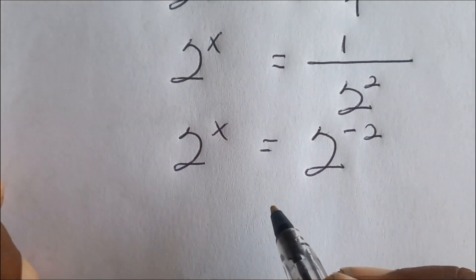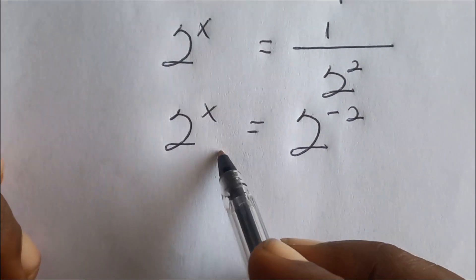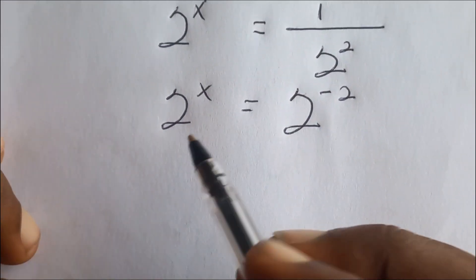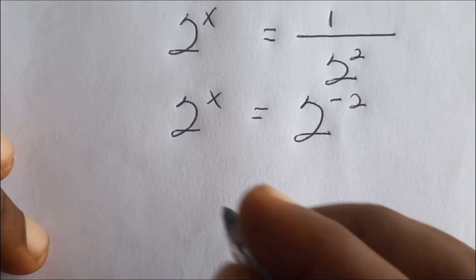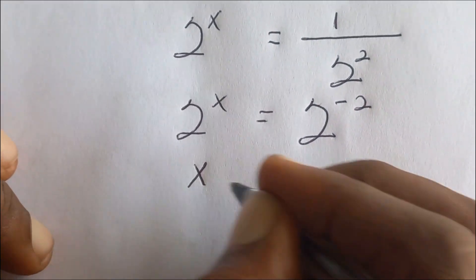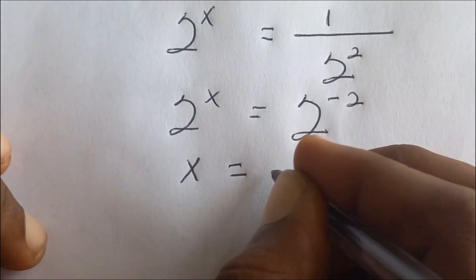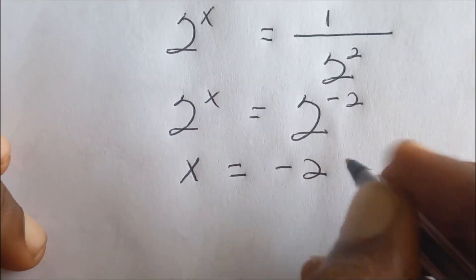Now in indices, when the bases are the same we equate the exponents. So we have x is equal to negative two.